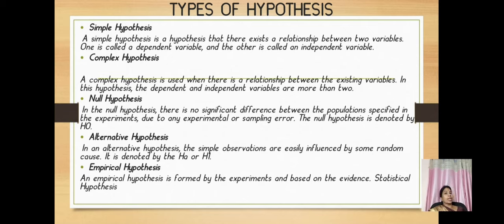Types of hypothesis: we have simple hypothesis, complex hypothesis, null hypothesis, alternative hypothesis, and empirical hypothesis. Simple hypothesis denotes the relationship between two variables: one is called a dependent variable, another one is independent variable. Whereas complex denotes the relationship between the existing variables, that is the dependent and independent variable or more than two.